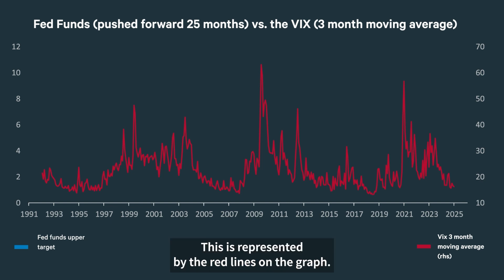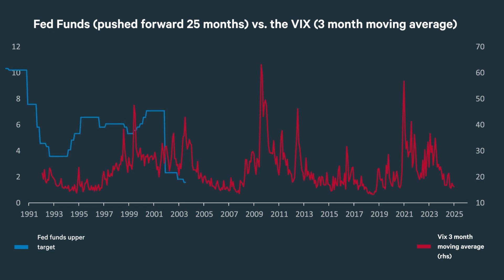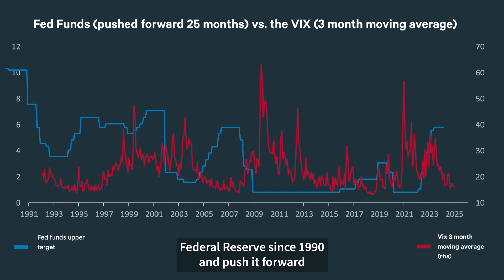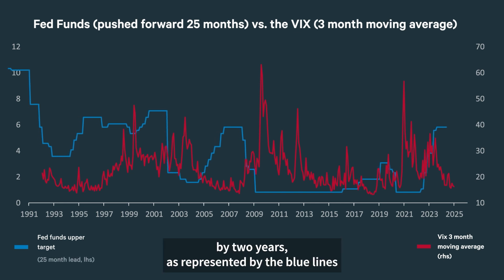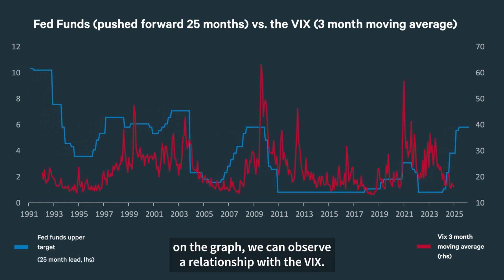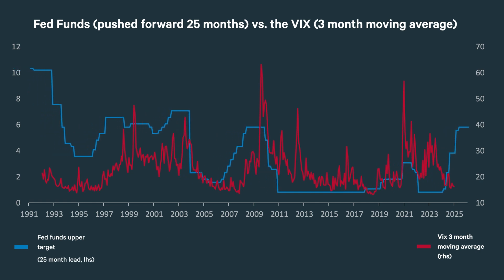This is represented by the red lines on the graph. Now if we look at the rate of interest set by the U.S. Federal Reserve since 1990 and push it forward by two years — as represented by the blue lines on the graph — we can observe a relationship with the VIX.